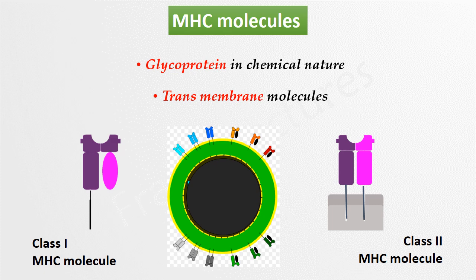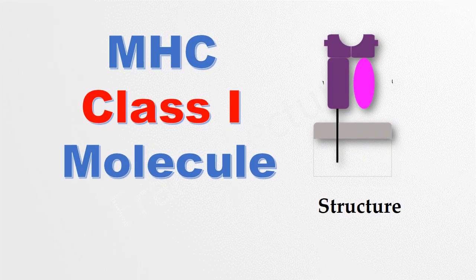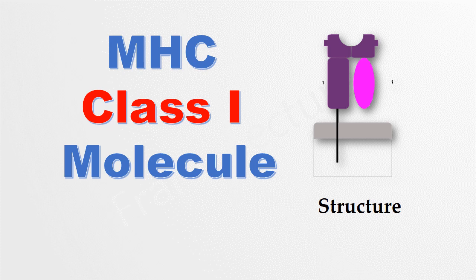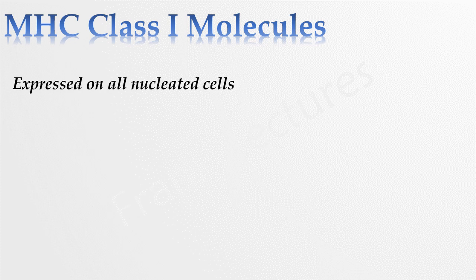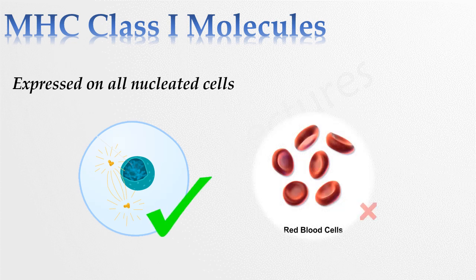By the term transmembrane we mean that they are membrane spanning molecules. Let's study structure of class 1 MHC molecules. Class 1 molecules are expressed on all nucleated cells. In other words, they are found on the cytoplasmic membranes of all cells except red blood cells.